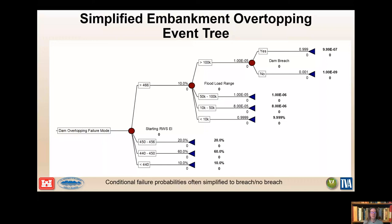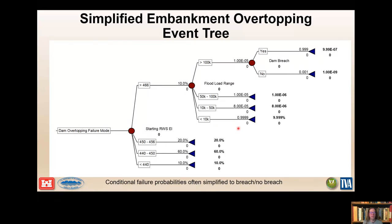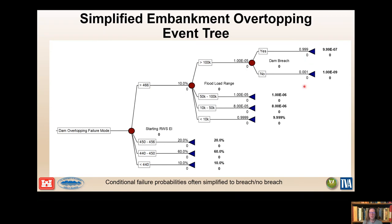Here's a simplified event tree for overtopping with three nodes: water surface elevation, flood loads, and then breach. Pretty simple. This screening-level node tree may be appropriate for a screening-level assessment or portfolio risk assessment. The nodal probabilities come from reservoir elevation percentages — the percentage of time the reservoir has been at that elevation — flood load ranges for that elevation from the hazard curve, and then team judgment. Given a reservoir elevation and depth over the crest, we might consider dam breach exceedingly likely at 0.999.